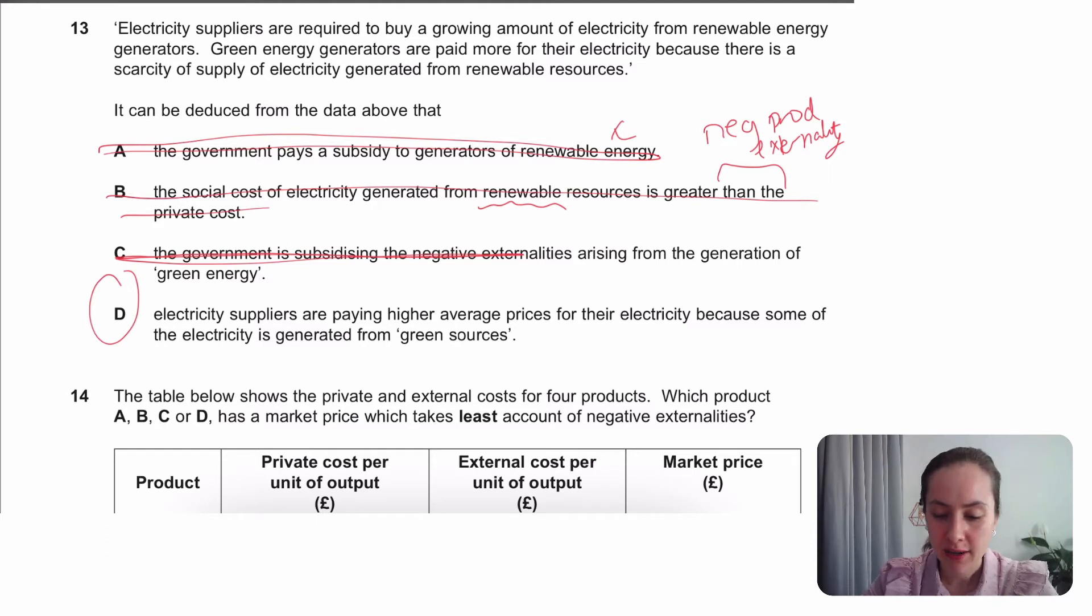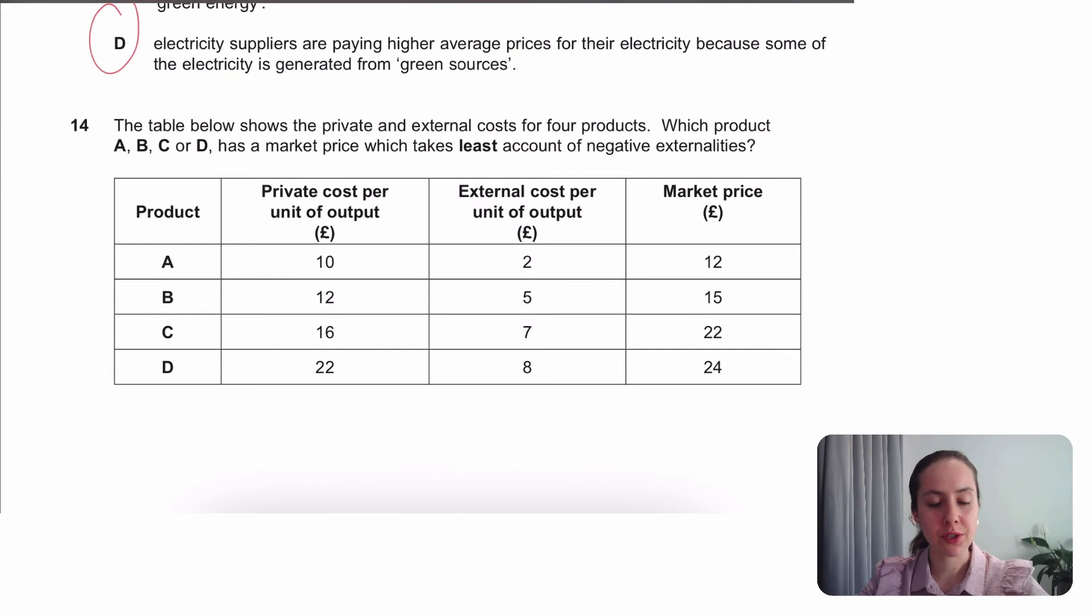And so we're left with D. Electricity suppliers are paying higher average prices for the electricity because some of it's generated from green sources. Yes. They have said that green energy generators are paid more for the electricity. So that's it. Be careful to only conclude what you can say.